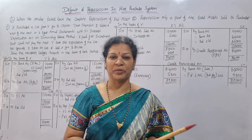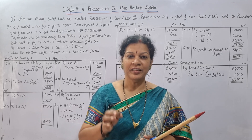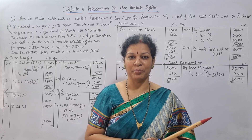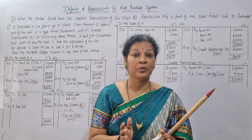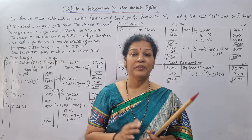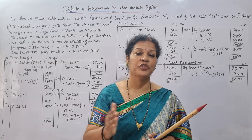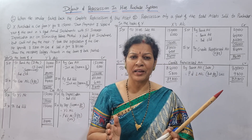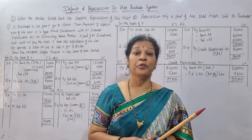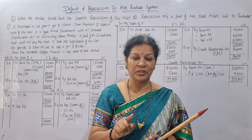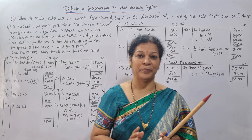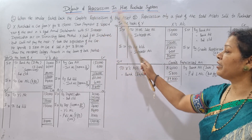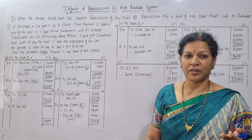Hello dear students, welcome to Devika's Commerce and Management Academy. Today we'll see what happens in case of default of making payment. As I already told you in the introductory class, if the purchaser is unable to make any installment, the seller or hire vendor has full right to take back the asset — the right to repossess the asset. Now we are going to see default and repossession in the hire purchase system.